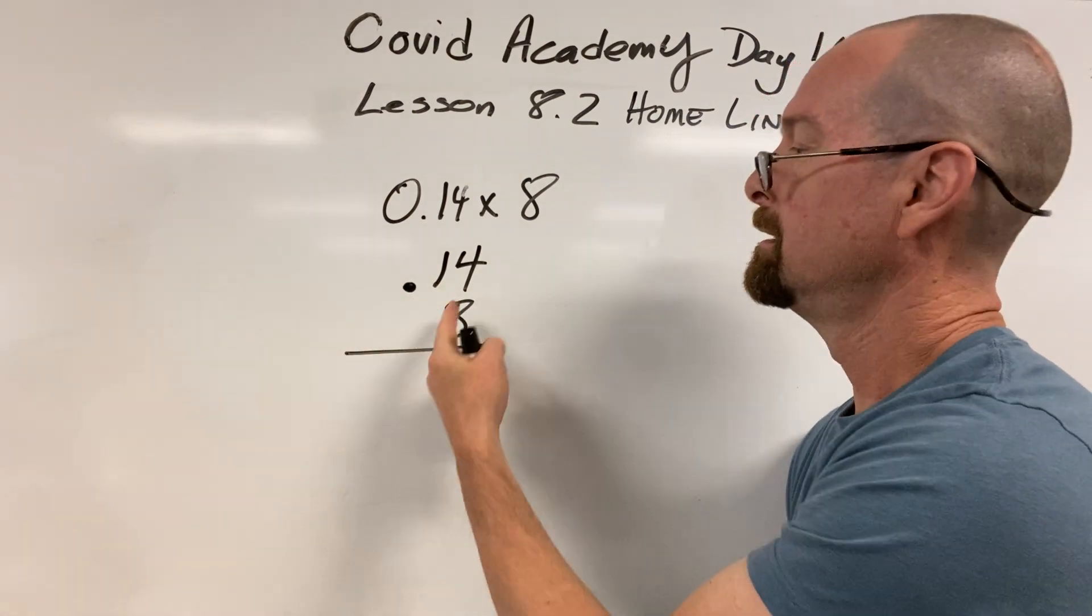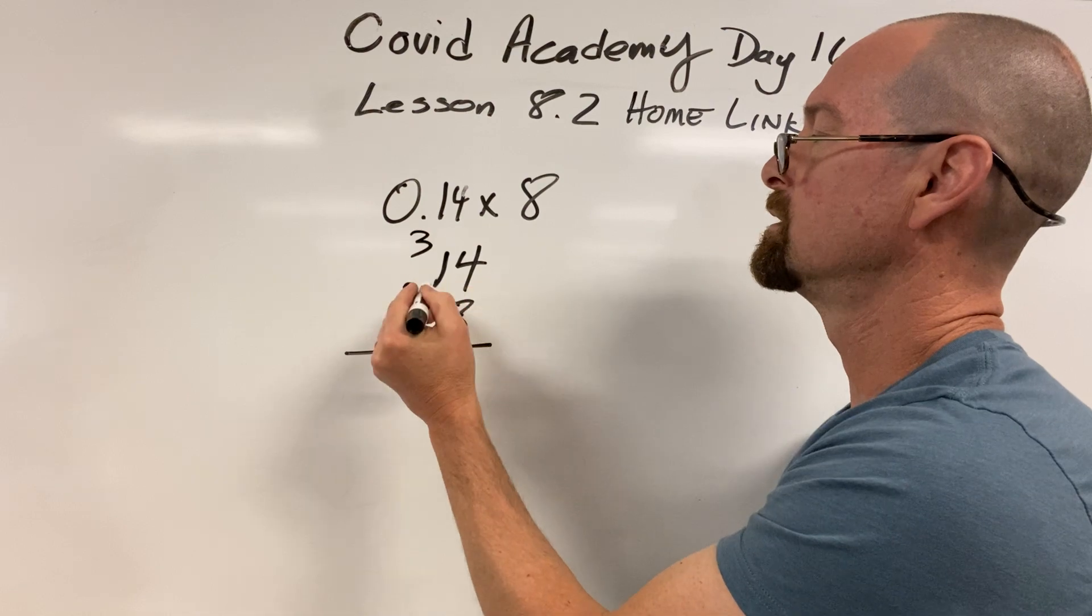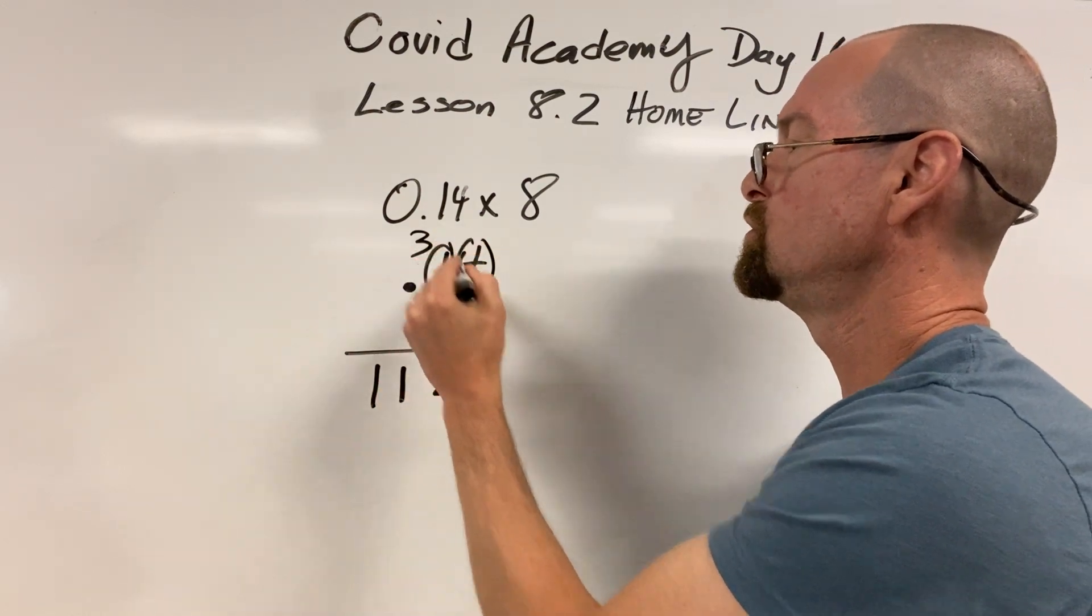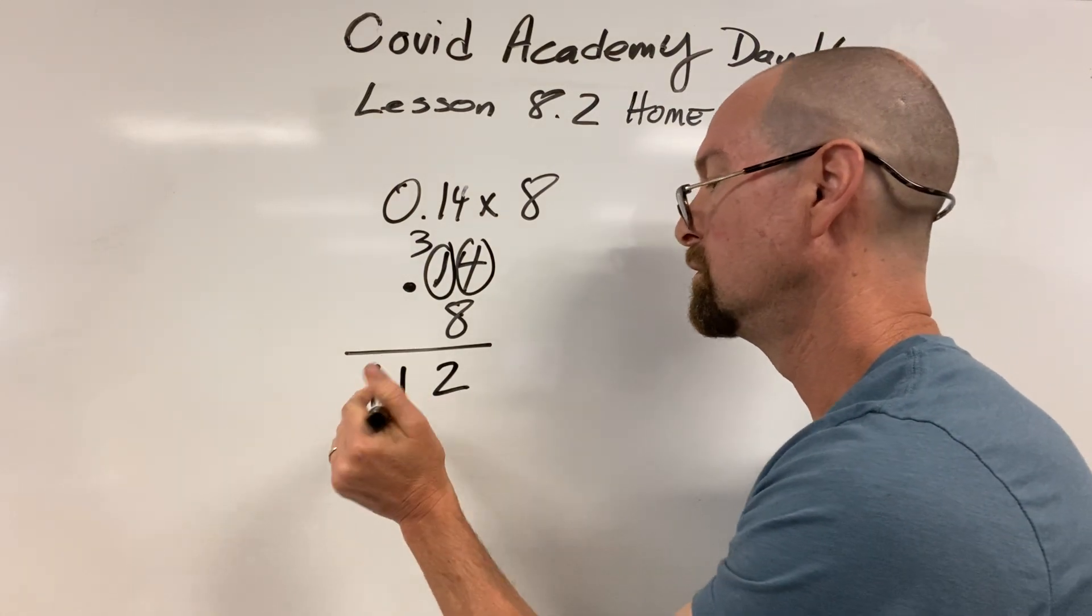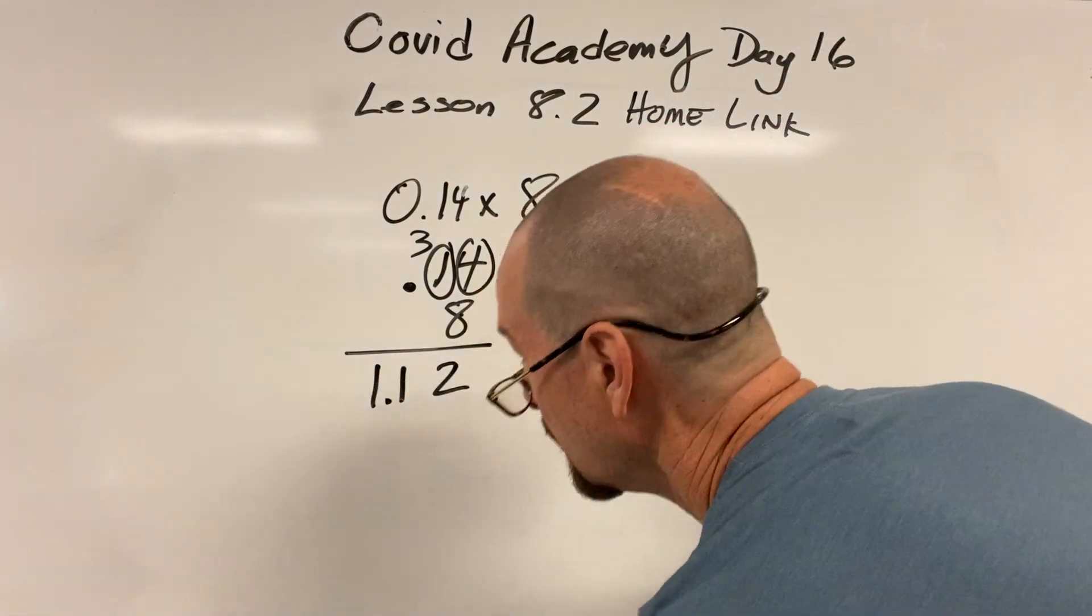Now ignore them. 8 times 4 is 32, carry this 3. 8 times 1 is 8, 3 more is 11. There are 1, 2 cute little things that are behind a decimal point. So you start here and you go in 1, 2. That's the answer. You're on it. And the last one.